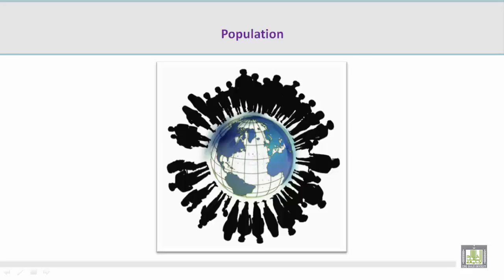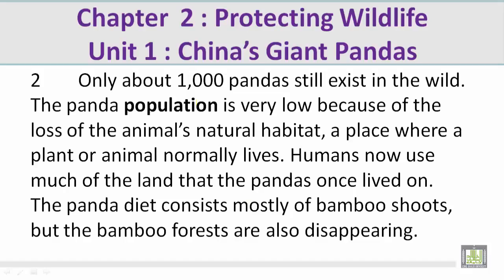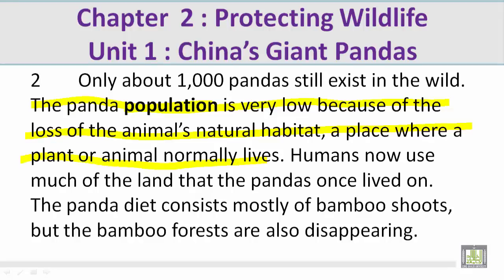I see in this picture a number of people all around the world and animals. And that's what population means — a number of people and animals in an area. Now let's take a look at the paragraph containing the vocabulary word population. The panda population is very low because of the loss of the animal's natural habitat — a place where a plant or animal normally lives.